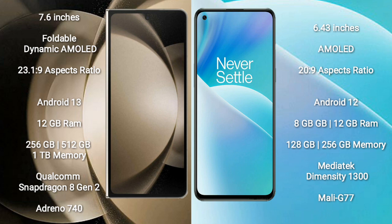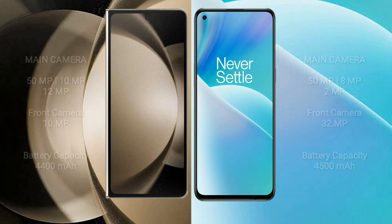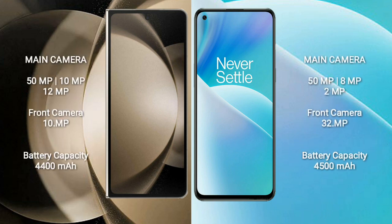OnePlus Nord 2T comes with 8GB or 12GB RAM and 128GB or 256GB internal storage. It is powered by the MediaTek Dimensity 1300 processor with GPU Mali-G77.